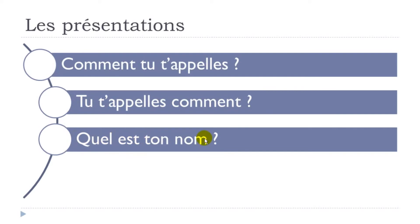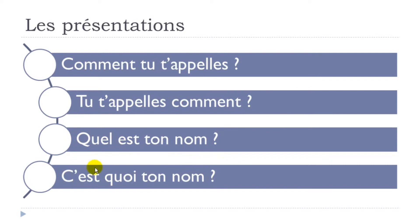Quel est ton nom? — 'What is your name?' And another very informal option: C'est quoi ton nom? If you translate it directly it's 'It's what, your name?' — it sounds really strange in English, but it is possible in French. It is not formal at all, so don't use it in important or formal situations.